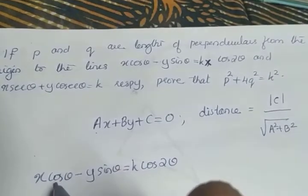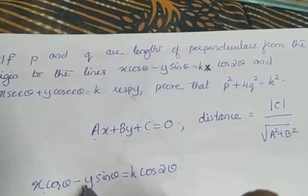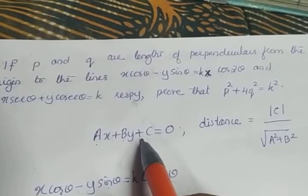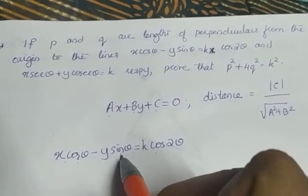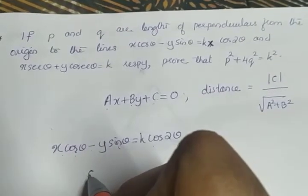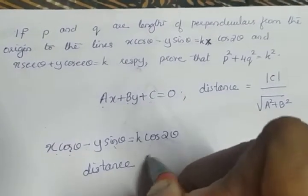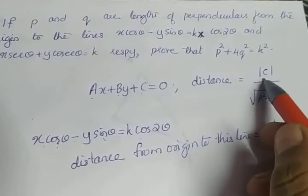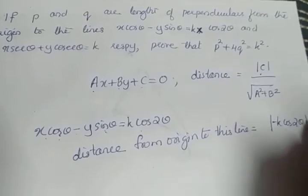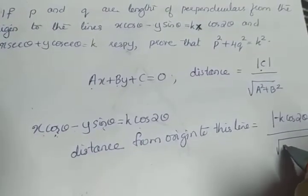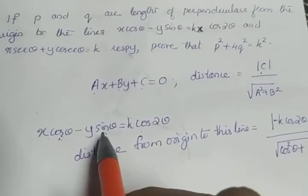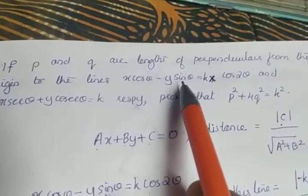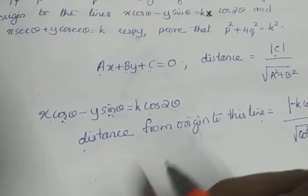Here, A is the coefficient of X which is cosθ, B is the coefficient of Y which is -sinθ, and C is the constant term which equals -K cos2θ, because C is on the left side and here it is on the right side. So A = cosθ, B = -sinθ, and C = -K cos2θ. The distance from the origin to this line is given by |−K cos2θ| / √(cos²θ + sin²θ).